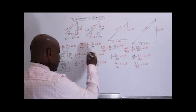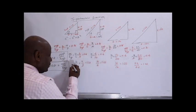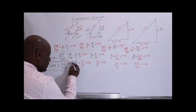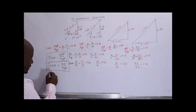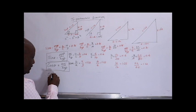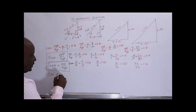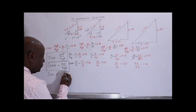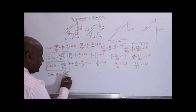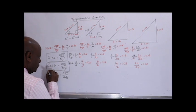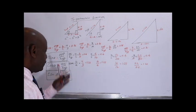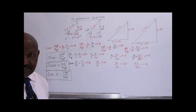So B over A is the tangent. Tan theta is equal to opposite over adjacent.